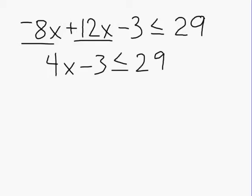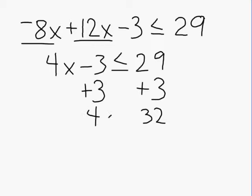We have to take the minus 3 and do the opposite of that, which is to add 3. We have to make sure that whatever we do to one side of our inequality sign, we have to do to the other side as well. On the other side, we now have 29 plus 3, which gives us 32. On the left hand side, we only have 4x remaining because the opposite integers cancel each other out to equal 0.